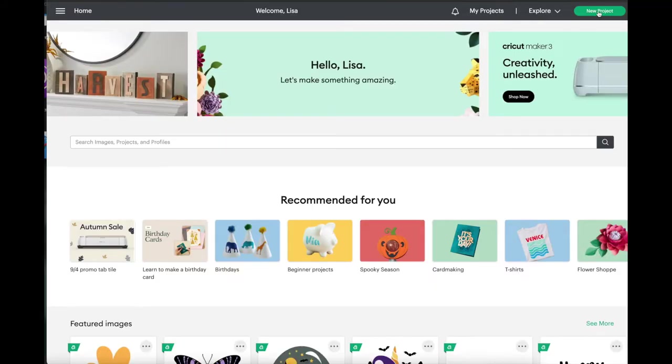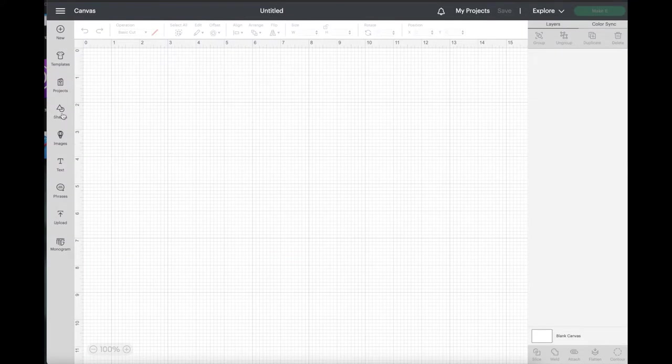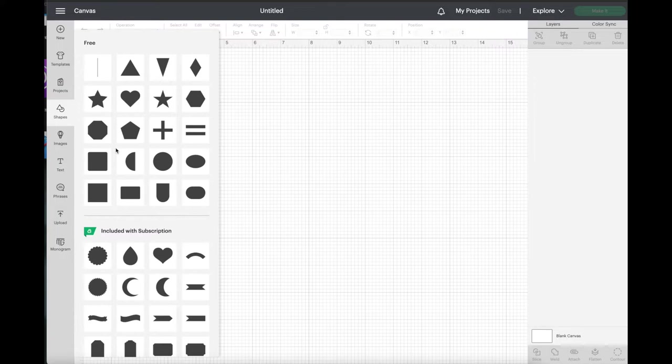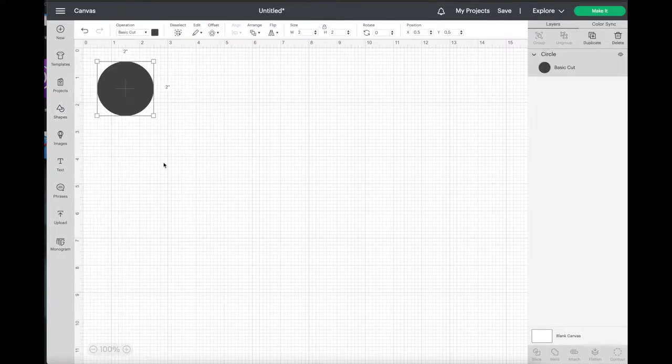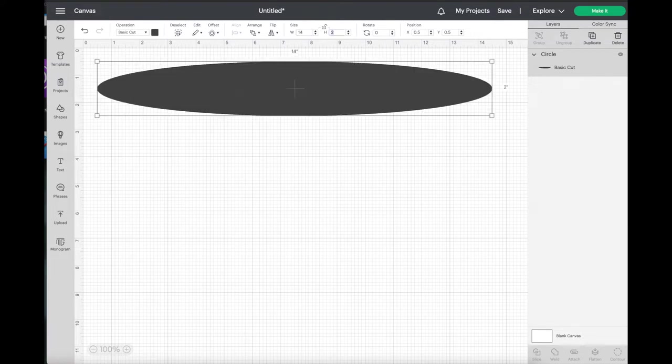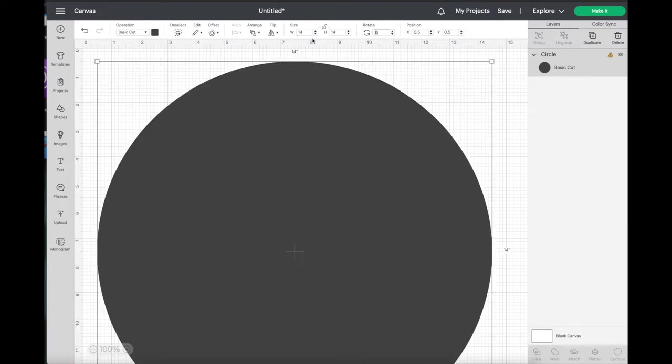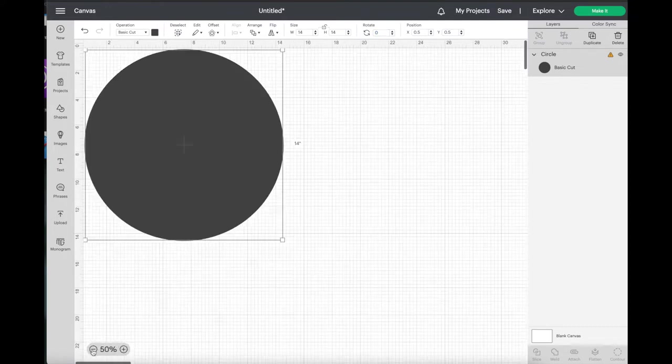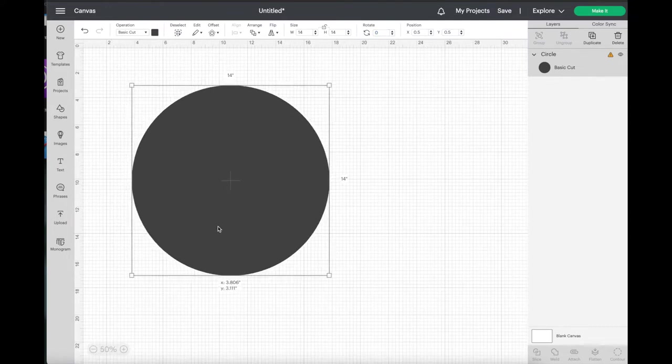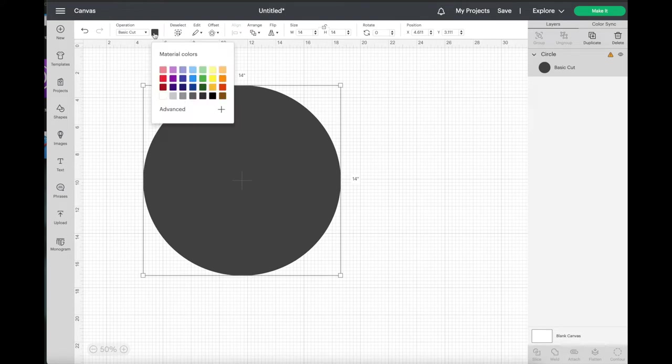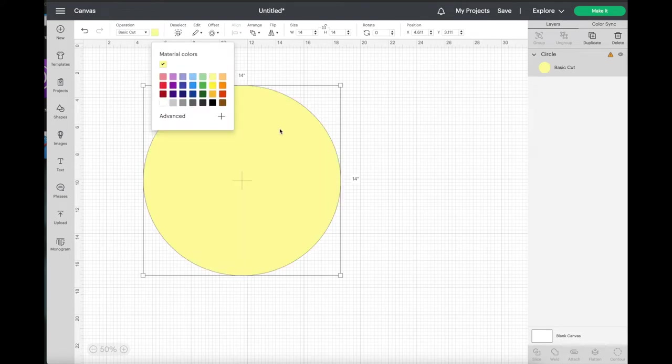Now I have a Cricut so I went into Design Space and I started a new project. I added in the shape and I chose a circle because I'm using a wood round. Across the top of the canvas you're going to see the word size. I clicked on the width box and added in the width. Now the circle is actually 18 inches but I only wanted my image to be 14 inches. If you're using a different shape you can click on the padlock to unlock the dimensions and you can make them whatever you need to. I did make the circle yellow so I could see my image better.